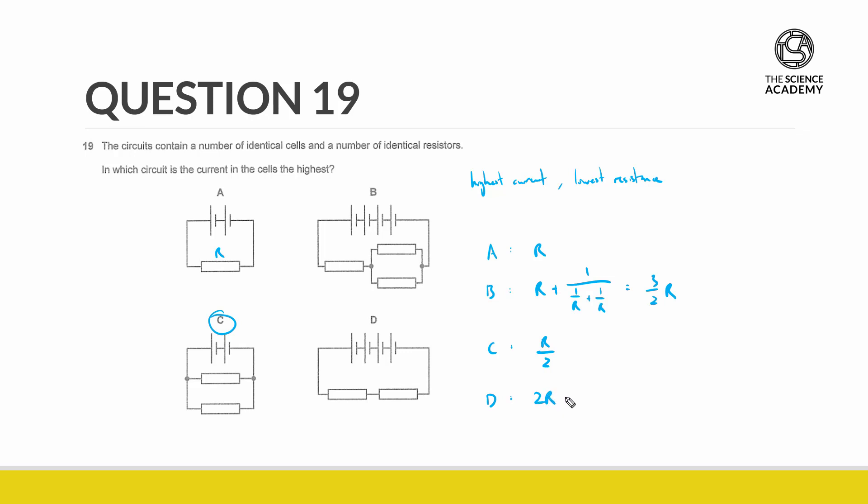So looking at the four options, we can see clearly that C has the lowest possible total resistance and therefore the current will be the highest.